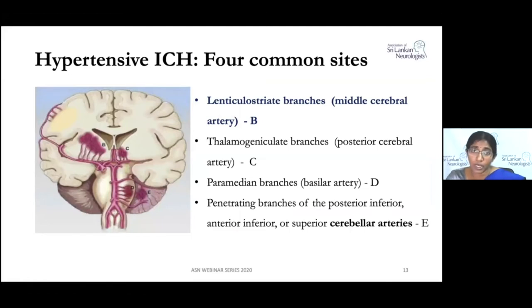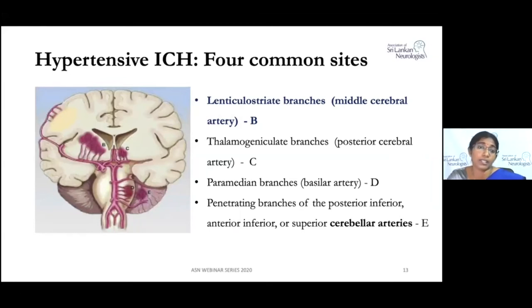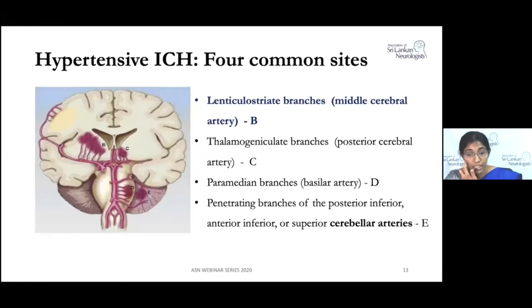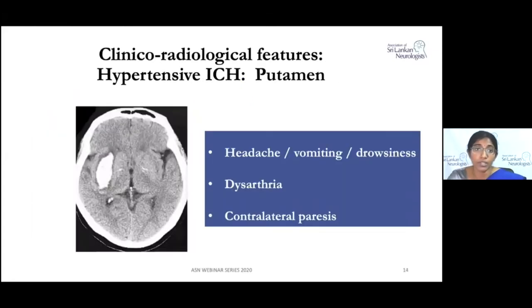The common sites of penetrating vessel bleeds are: the lenticulostriate branches from the middle cerebral artery (most common), the thalamogeniculate branch from the posterior cerebral artery, paramedian branches from the basilar artery, and cerebellar arteries from the cerebellum.